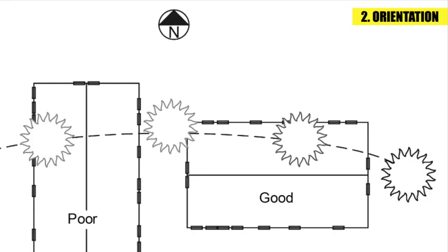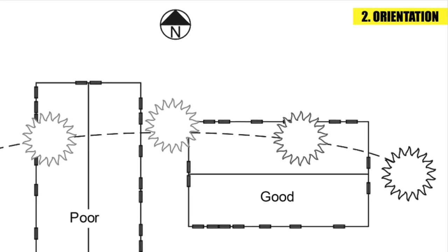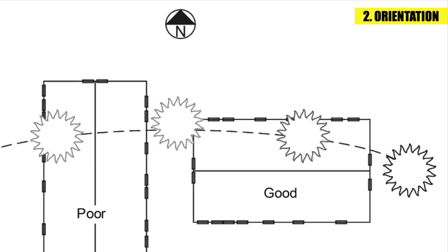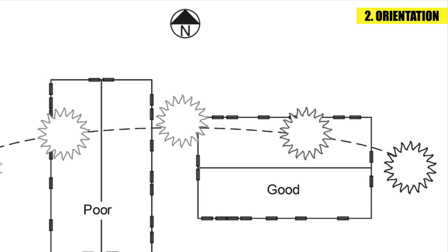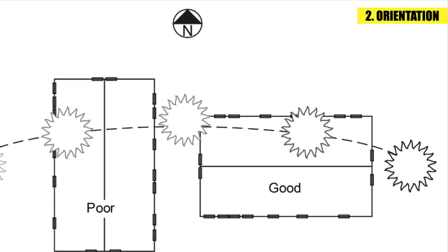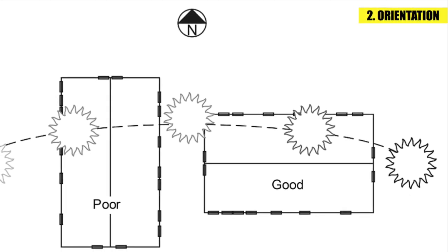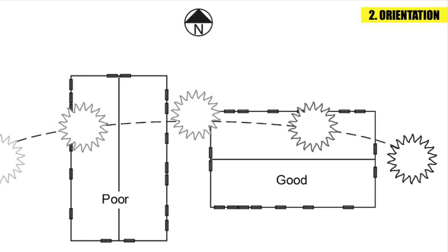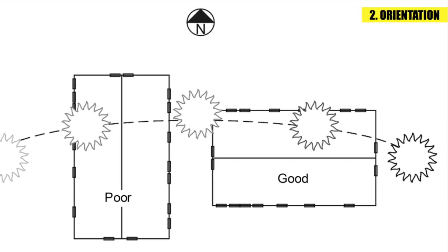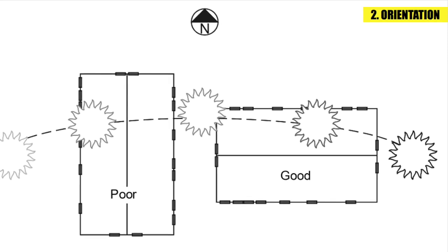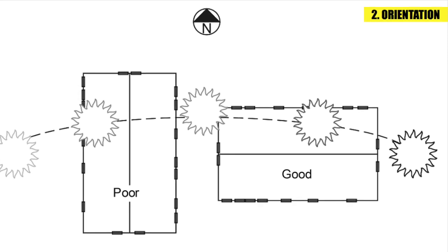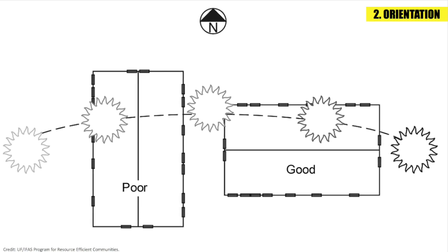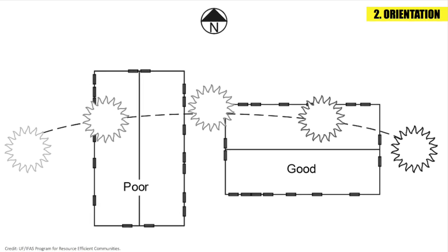The second one is the orientation. The orientation of the site plays a very important role in siting of the building. This, when combined with the wind direction and sun path, would give a good idea as to how the design should be oriented so as to optimize the design. The orientation along with the sun path will also determine the placement of the rooms inside the building.